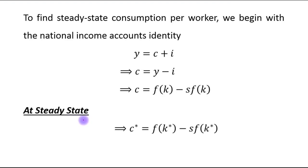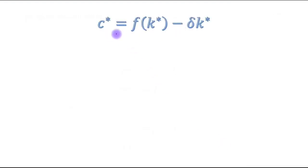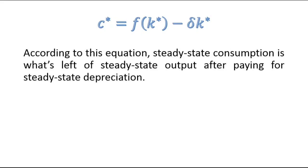At the steady state, investment equals depreciation, so steady-state consumption equals steady-state output minus steady-state depreciation: c* = f(k*) − δk*. This equation shows that steady-state consumption is what remains of steady-state output after paying for steady-state depreciation.